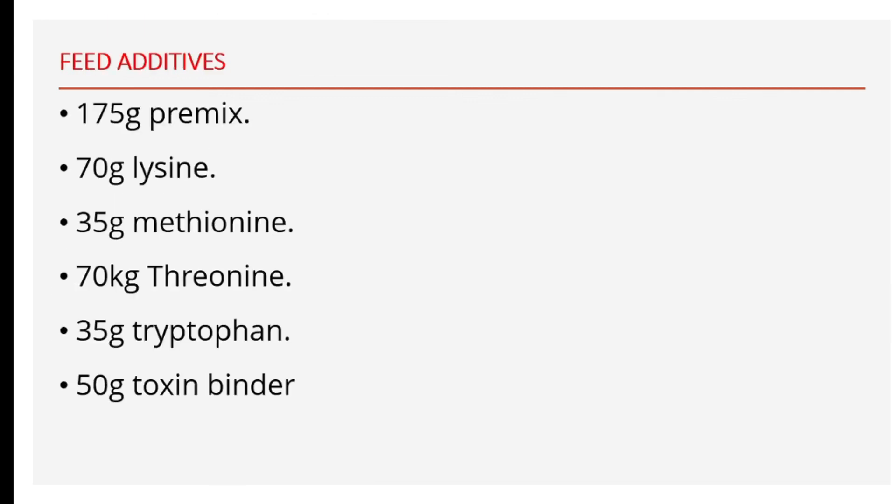For the layer mash feed additives, add 175 grams of premix, 70 grams of lysine, 35 grams of methionine, 70 grams of threonine, 35 grams of tryptophan, and 50 grams of toxin binder. We need a significant amount of these amino acids in the layers feed as they help with fast growth and egg production.